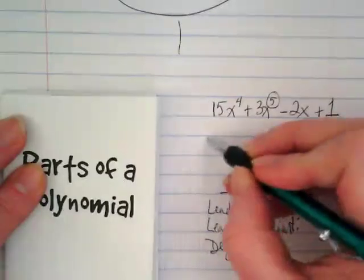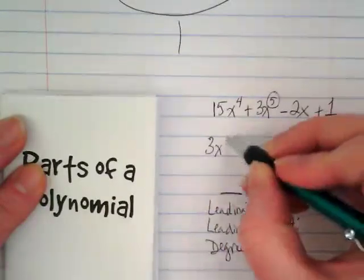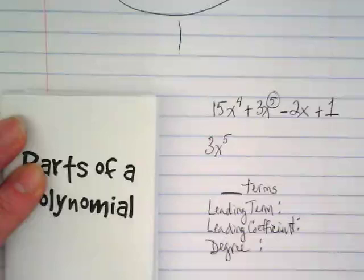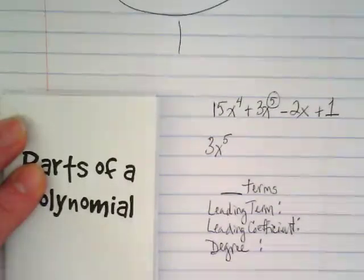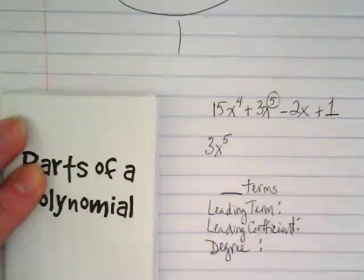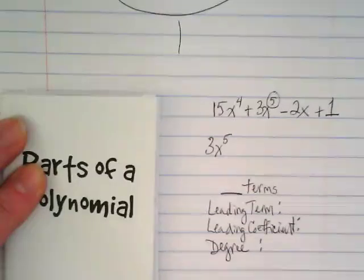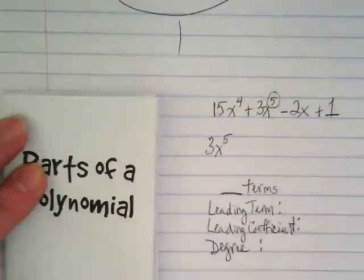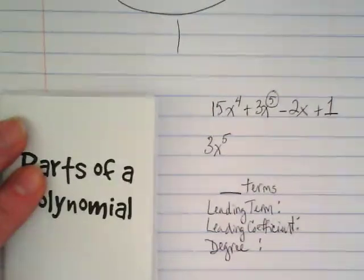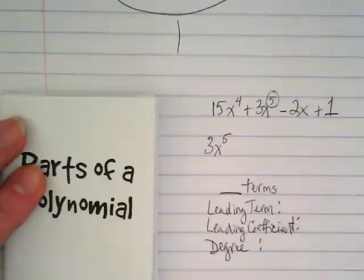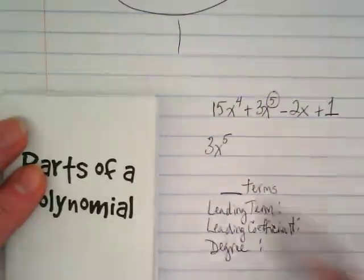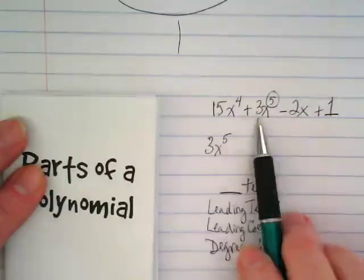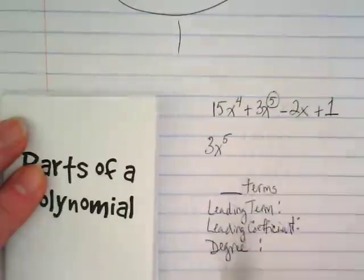Anyway, 3x to the 5th should be our leading term because the exponent is the highest. It's the highest power. The highest power comes first, and the confusion with this is we are so used to thinking that 15 is bigger than 3. Shouldn't that be first? We're not looking at the coefficient for the power. We're looking at the exponents for the power.